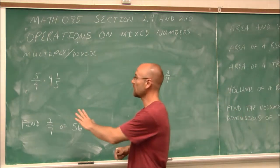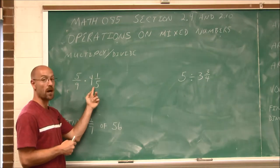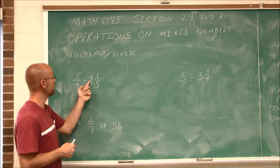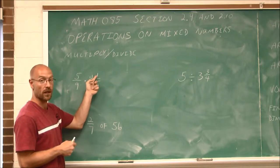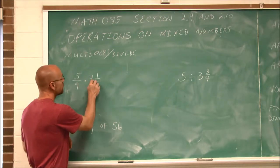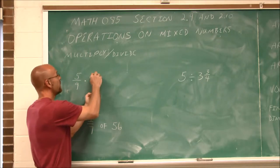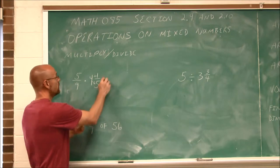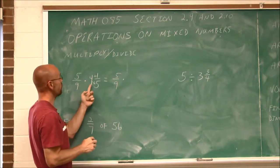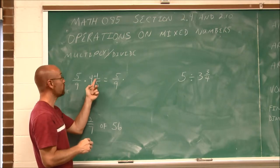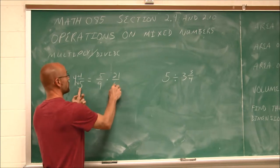If we recall from the last video, if we're going to do some multiplication here, we need to write this as an improper fraction. To do that, we go the quotient times the divisor plus the remainder. I'm going 4 times 5, and then I'm going to add 1. So I'm going to rewrite the problem. I have 5/9 times 4 times 5 is 20, plus 1 is 21, over the divisor of 5.